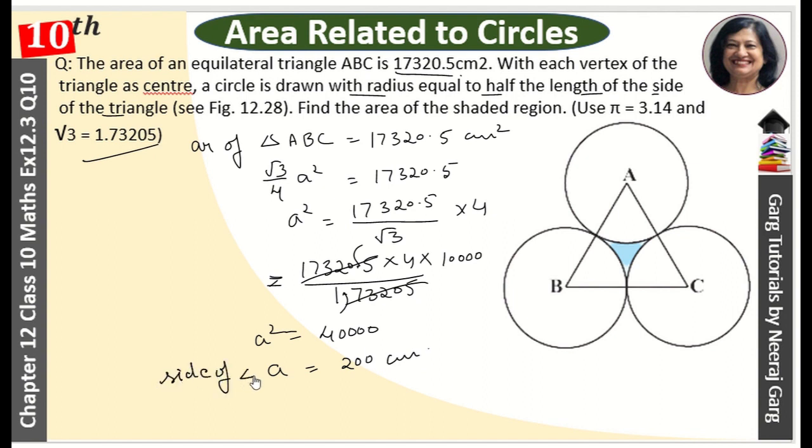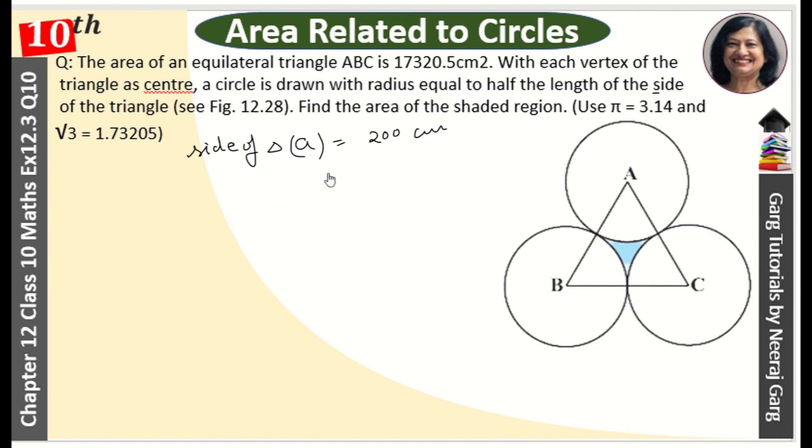Side of triangle, this whole side is 200 cm. So the radius is equal to half the length of side, so the radius will be 100 cm.